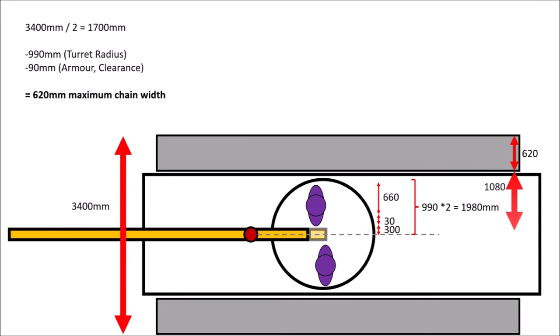So we can now work out the maximum chain width. The maximum width for trains is 3400mm. Earliest starting point for the chain including turret diameter and armor is 1080mm. So the maximum chain diameter is 620mm.